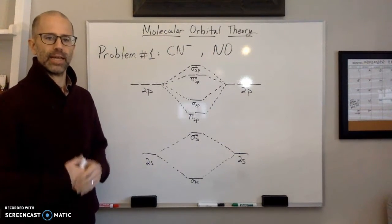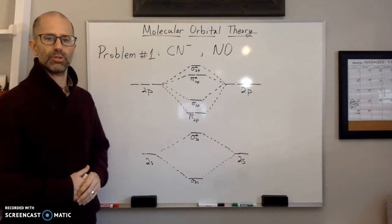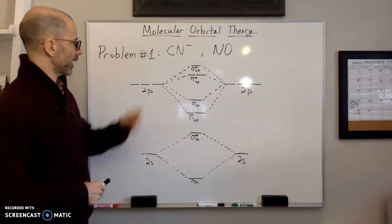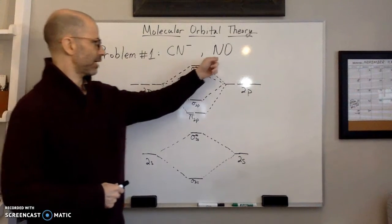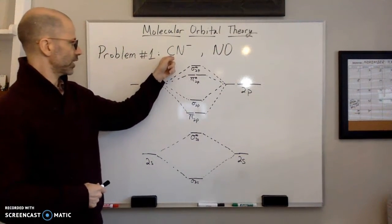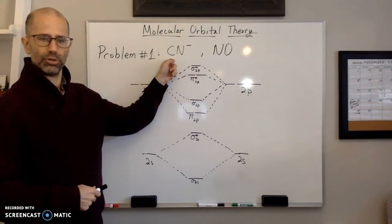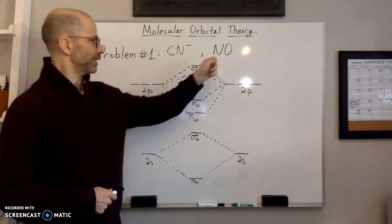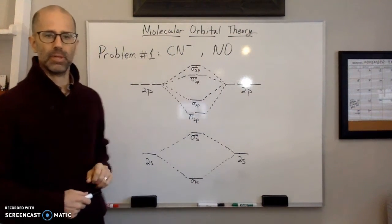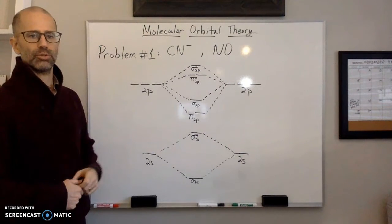And so you'll notice I have CN minus and I have NO, and so you can see that they are heteronuclear, meaning that they have two different atoms instead of having the same atom bonded to each other.